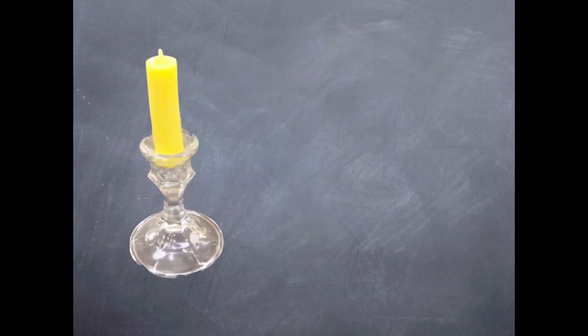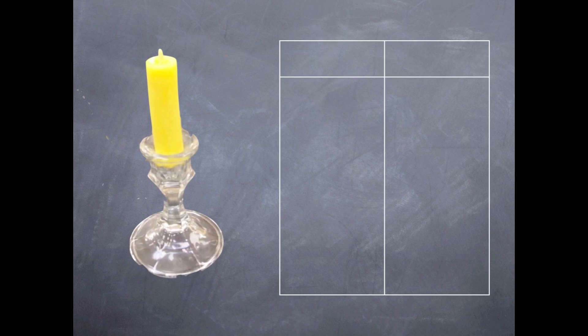So let's take a look at our object we are making observations on today. Some fair observations might be that it is yellow, that it is shaped like a cylinder, that it has a clear base and a thin extension at the top.